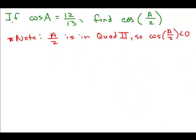So here is our problem. If cosine of A equals 12/13, the second part of this problem was to find the cosine of A over 2 and before we get started, we first figured out where A over 2 was. It was in quadrant 2 and so the cosine will be negative. So we're going to use the formula for the cosine of A over 2.